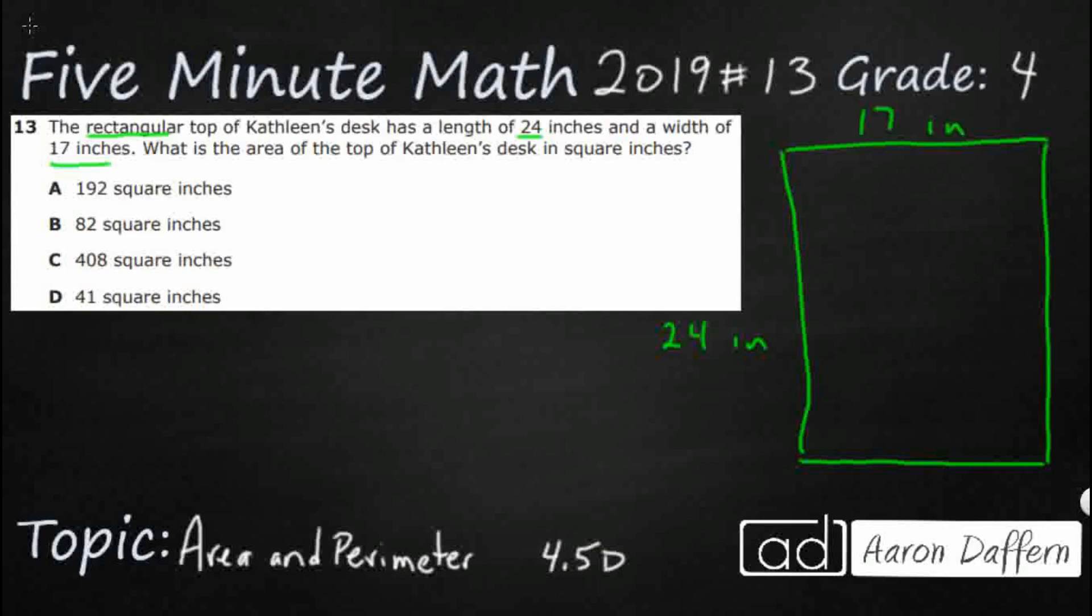We really don't need to know the other two sides because if this left side here is 24 inches, then the other side is going to be 24 inches. If the top side is 17, the bottom side is also going to be 17. So really that's all we get, and then we get our question, what is the area of the top of Kathleen's desk in square inches?